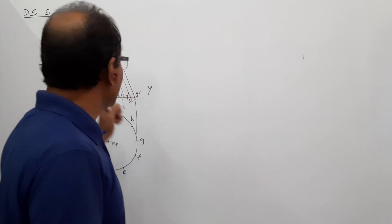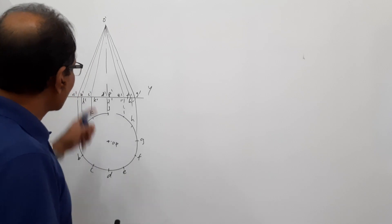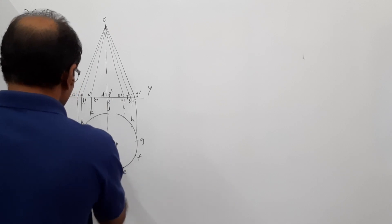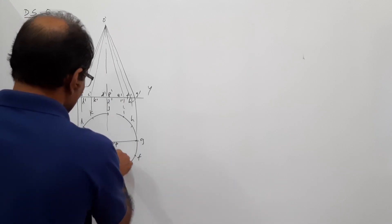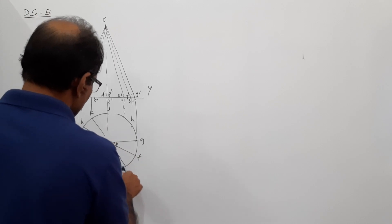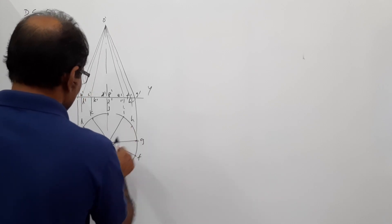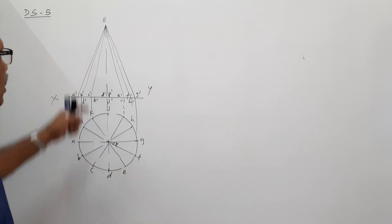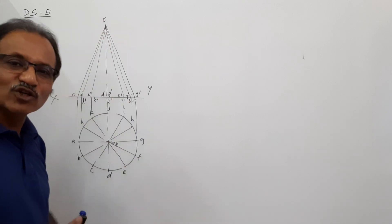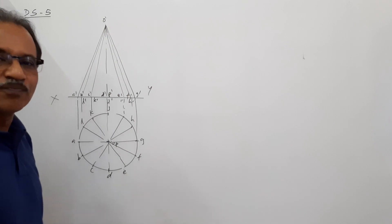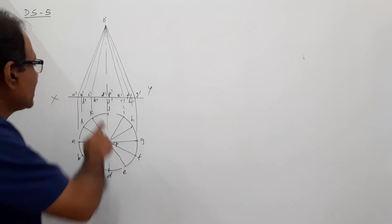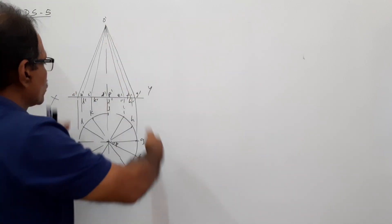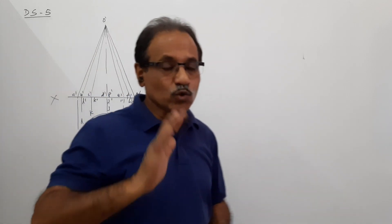To draw its development, you need the true length of the generator. I have actually shown all the generators in the elevation. When you draw them in the plan, they will be like this. We have drawn very lightly all the generators in the plan and elevation. O dash A dash is the true length of the generator, and O dash G dash also is the true length. Those are the true lengths available in the view. In the plan, none of the generators are true length. In the elevation, all other generators are shown but they are not of true length. Only O dash A dash and O dash G dash are true length.